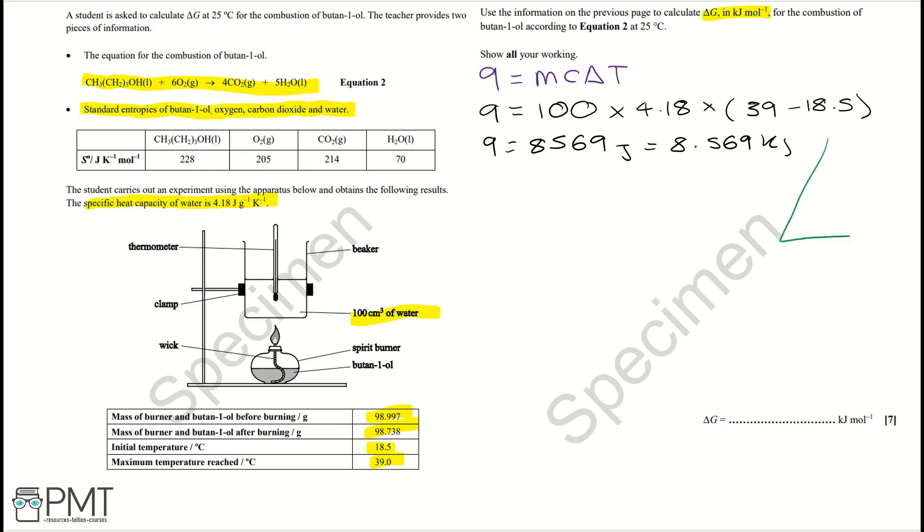Using the equation triangle of mass divided by moles times relative formula mass, we can work out the moles of butan-1-ol. But first, working out its mass, we're going to need the information in the table here, and we're going to minus the two masses. So it's going to be 98.997 minus 98.738. And that is equal to 0.259 grams of butan-1-ol.